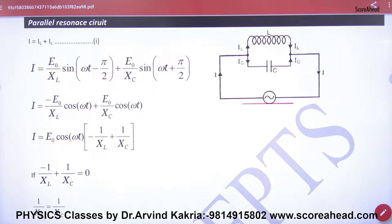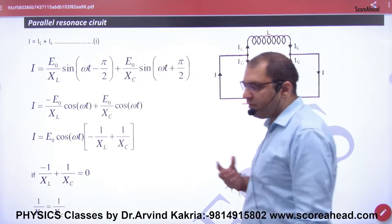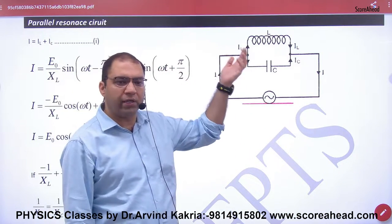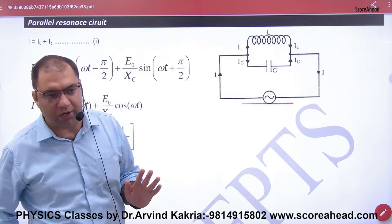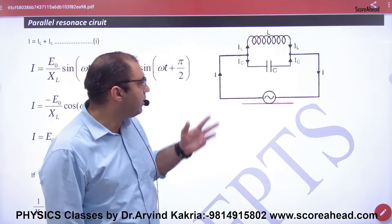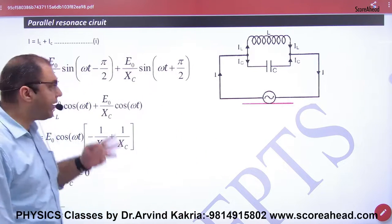Parallel. If parallel is connected, this is the source of EMF. So here the current went on some inductor and some capacitor. When the current in the inductor, it went on IL. The total current I = IL + IC.